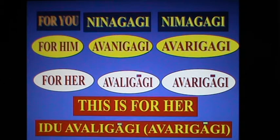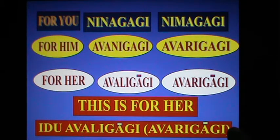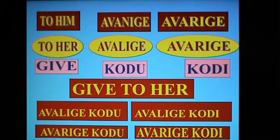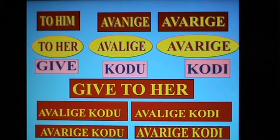This is for her — it is Avaligagi. Respect form is Avarigagi. To him: Avanigae (standard), Avarigae (respectful). To her: Avaligae (standard), Avarigae (respectful).